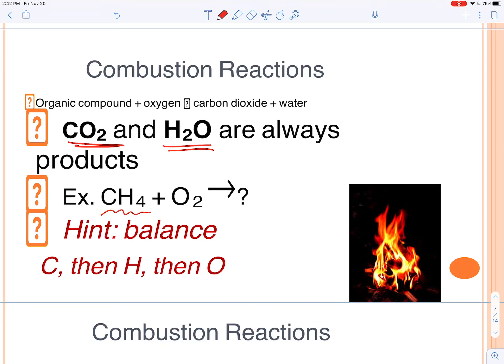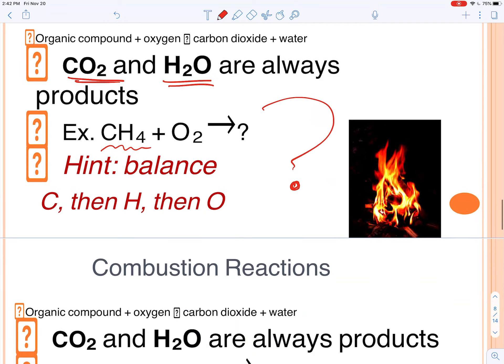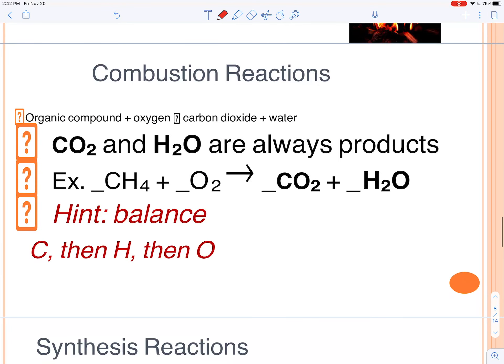So if we're trying to predict the products for the combustion of methane here, what are the products going to be? Yeah, it's carbon dioxide and water, always. So if you see something carbon and oxygen on the left side, most likely you're going to end up with carbon dioxide and water as products.